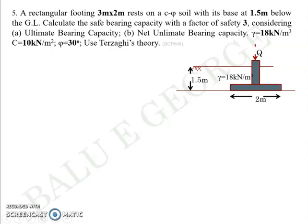We will continue the discussion on the numerical problems on the third module, bearing capacity of foundations. In the fifth question, you have a rectangular footing, 3m by 2m in plan and rests on a C-phi soil.